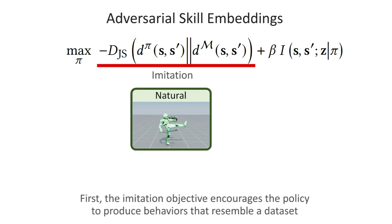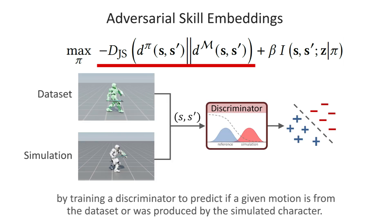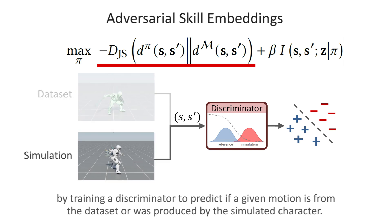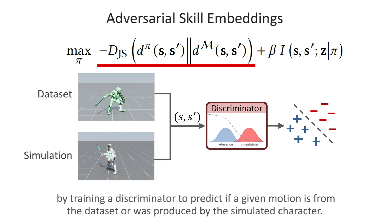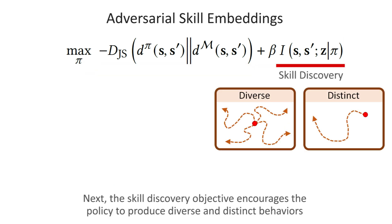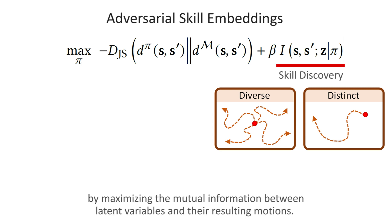First, the imitation objective encourages the policy to produce behaviors that resemble a dataset by training a discriminator to predict if a given motion is from the dataset or was produced by the simulated character. The low-level policy is then trained to produce motions that fool the discriminator. Next, the skill discovery objective encourages the policy to produce diverse and distinct behaviors by maximizing the mutual information between latent variables and their resulting motions.